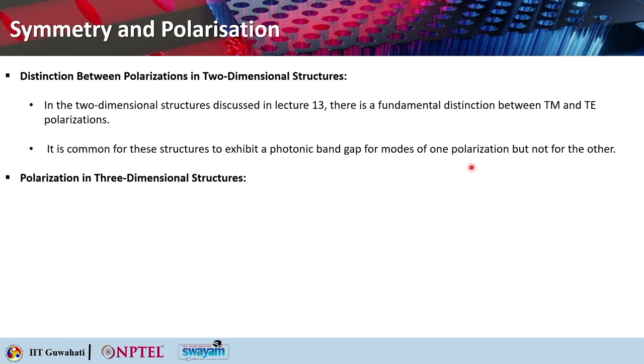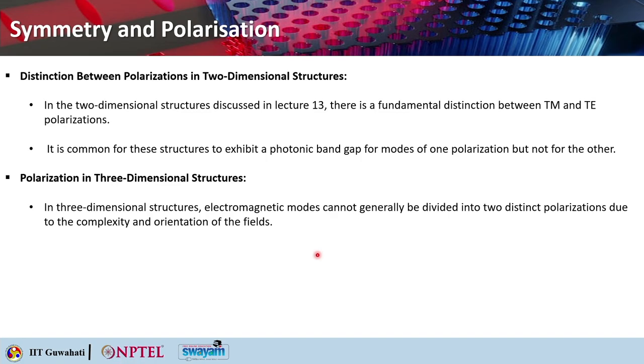When you talk about a complete band gap, we want the band gap to be for all directions — all values of K in the irreducible Brillouin zone — and also for both polarizations. When you talk about polarization in three-dimensional structures, the electromagnetic modes cannot generally be divided into two distinct polarizations because of their complexity and the orientation of the field.